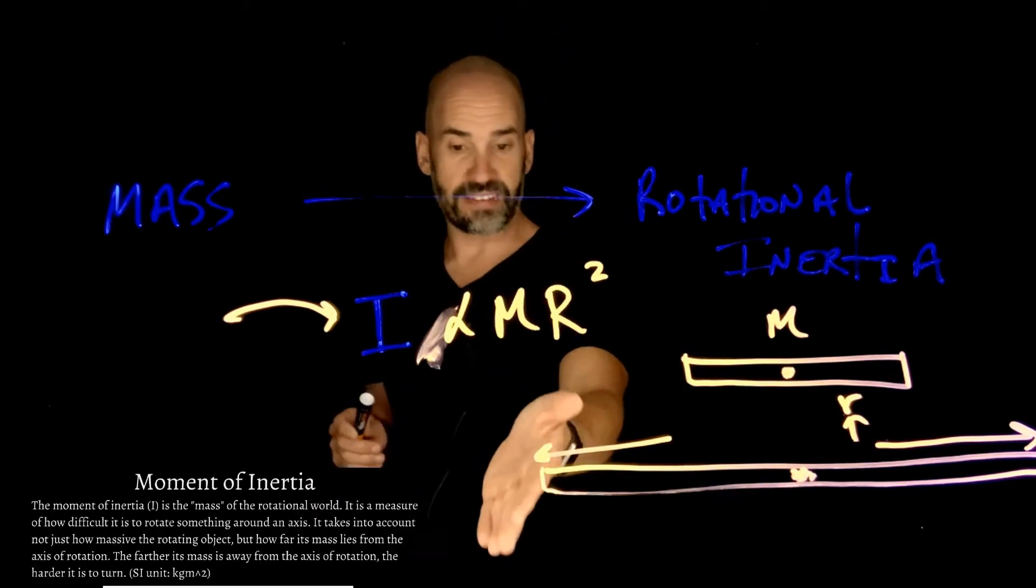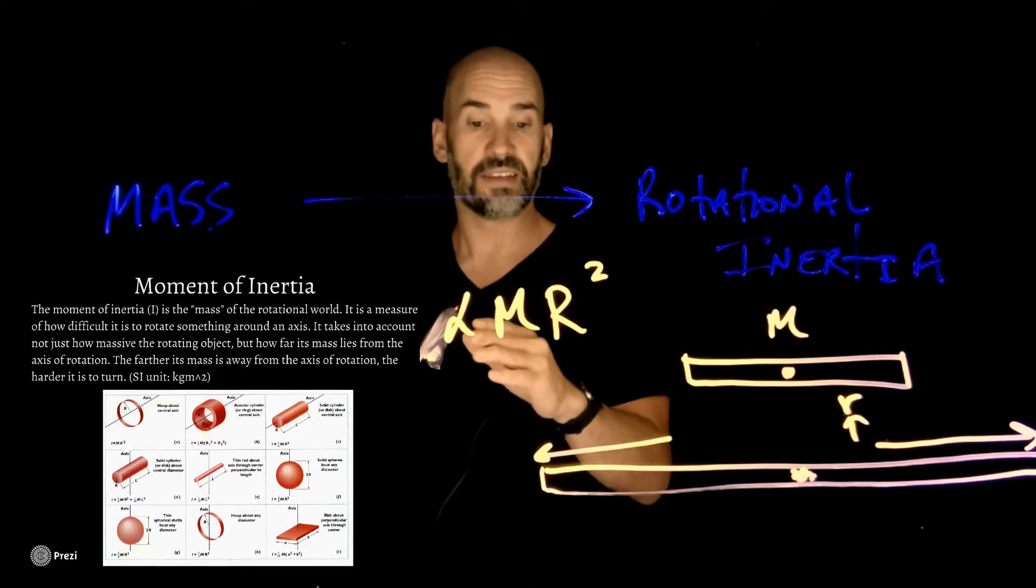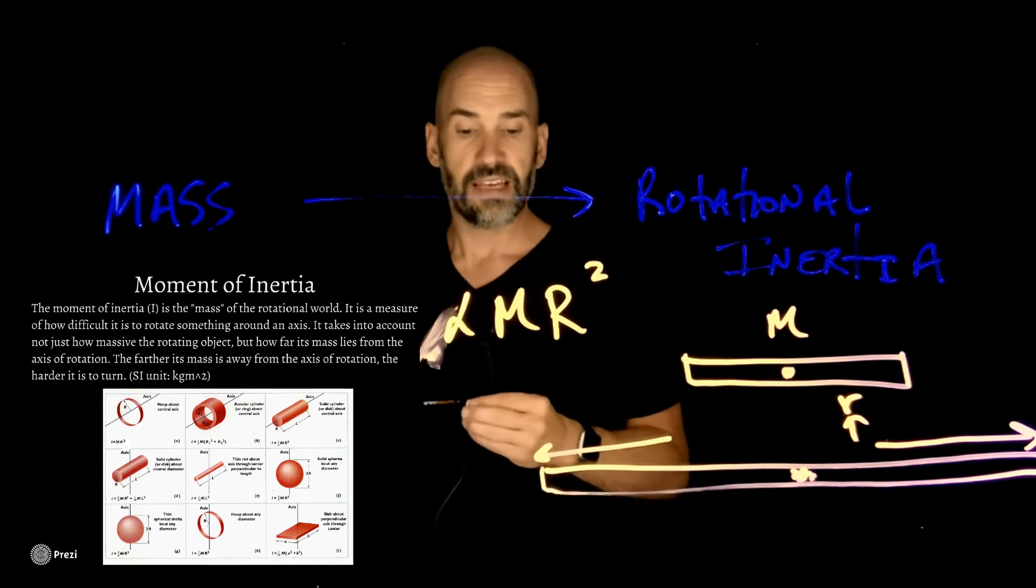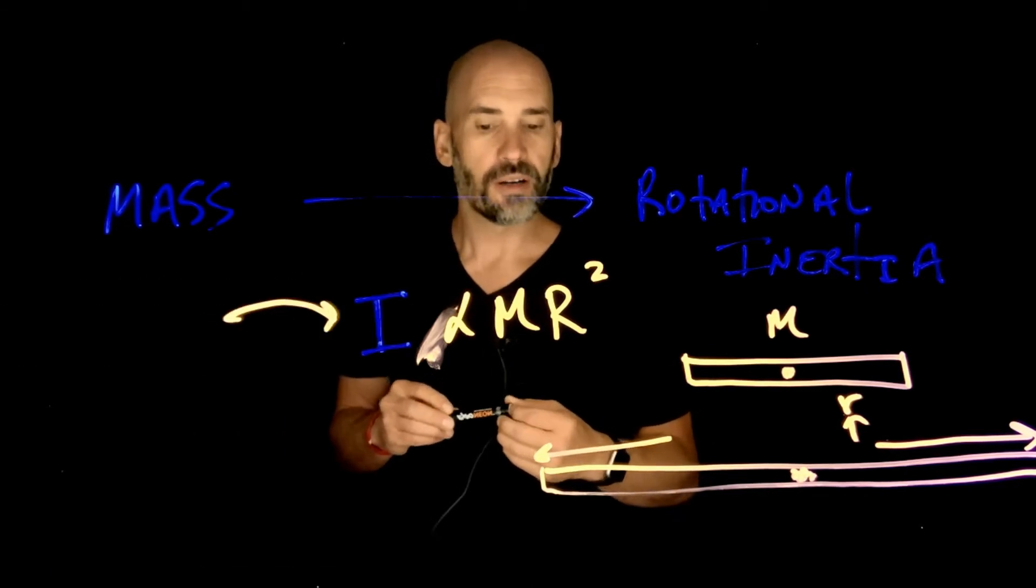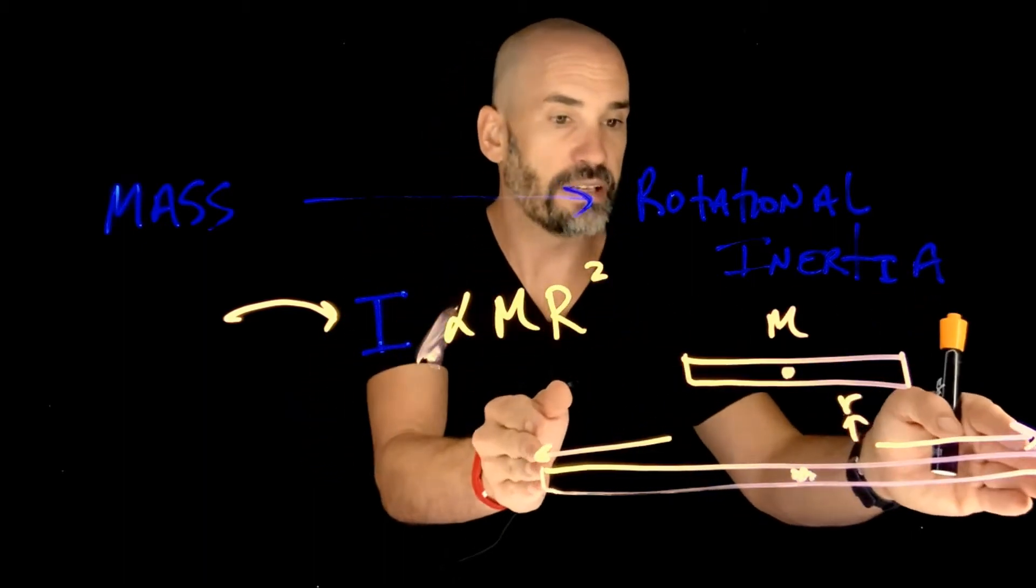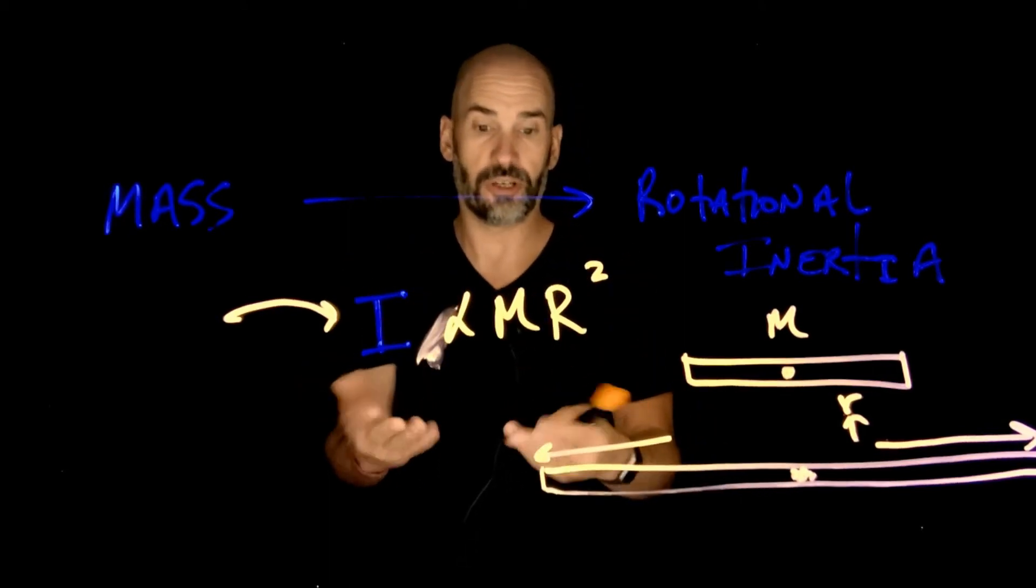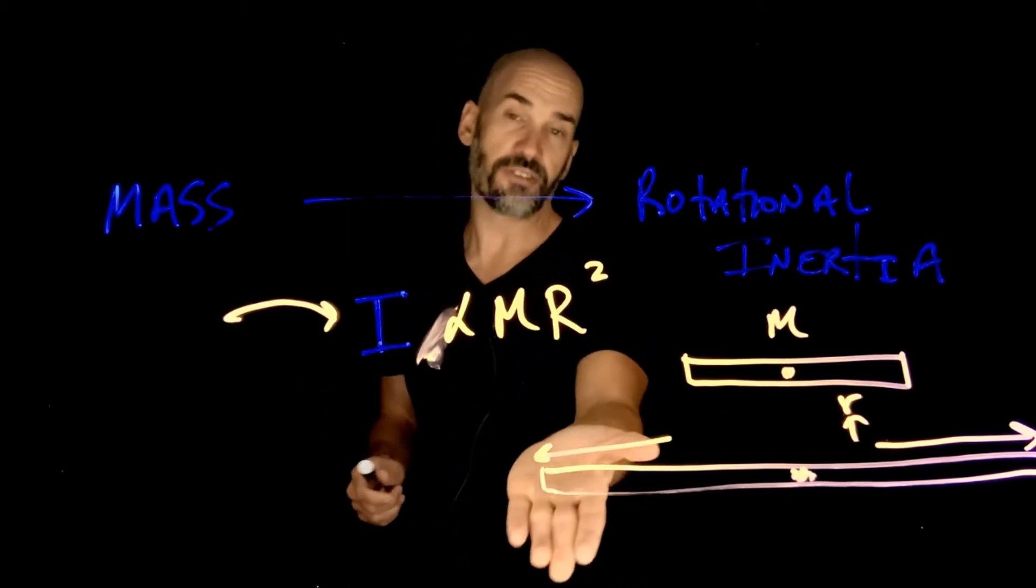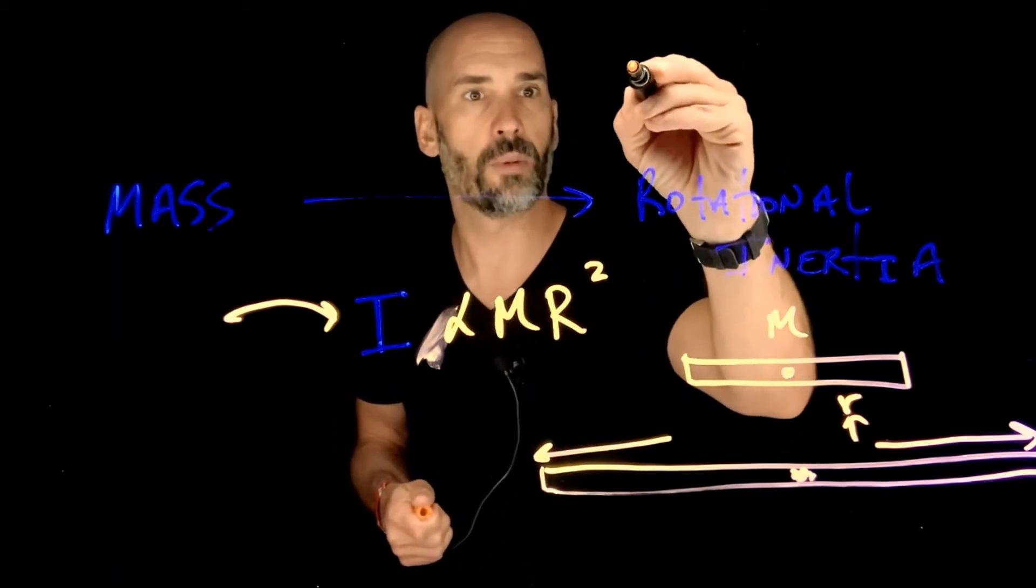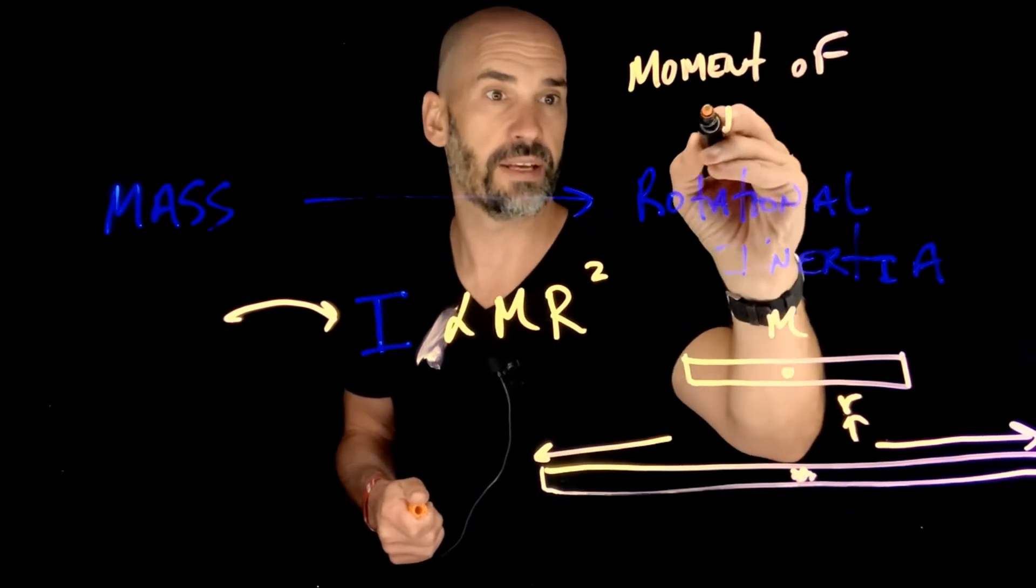If you go to the slide that says moment of inertia, you'll see a little chart that has the different moments of inertia of different objects. You'll notice that the more the object has mass concentrated farther away from the axis of rotation, the more rotational inertia you have. It's also called moment of inertia, as you can see from the slide. Rotational inertia and moment of inertia are basically the same thing.